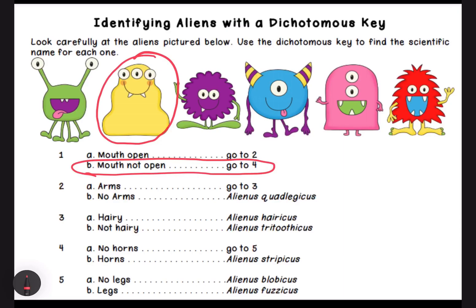Right here is step four. Are there horns? Yes or no? A horn would be on the top of its head. I don't see horns, so I'm going to go to step number five.